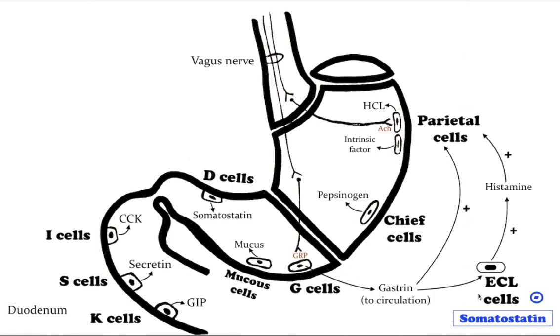For example, we already said it inhibits ECL cells. Mucus cells secrete an alkaline mucus that protects the epithelium against shear stress and from the corrosive nature of gastric acid.